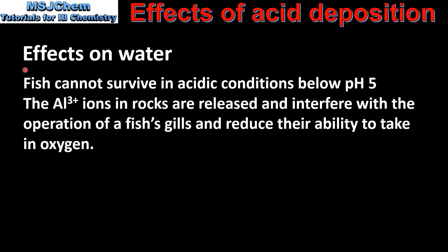Finally, we look at the effects on water. Fish cannot survive in acidic conditions below pH 5. The aluminium ions in rocks are released and interfere with the operation of a fish's gills, reducing their ability to take in oxygen.